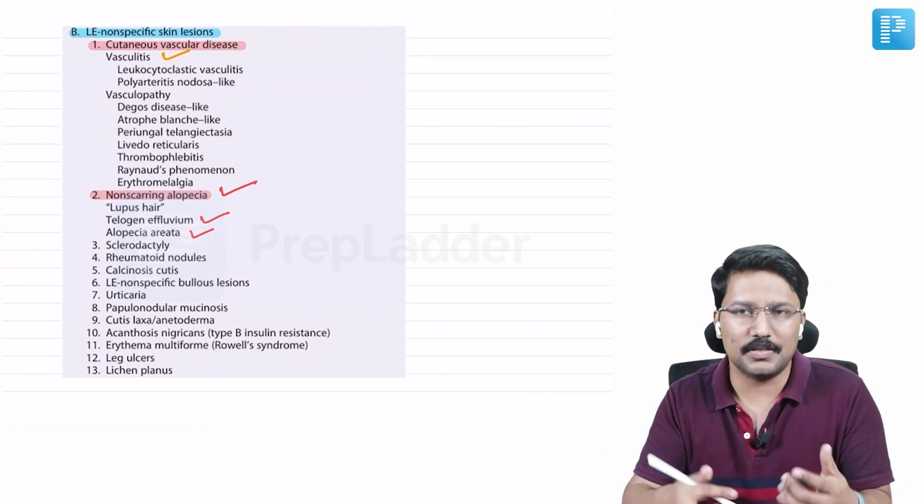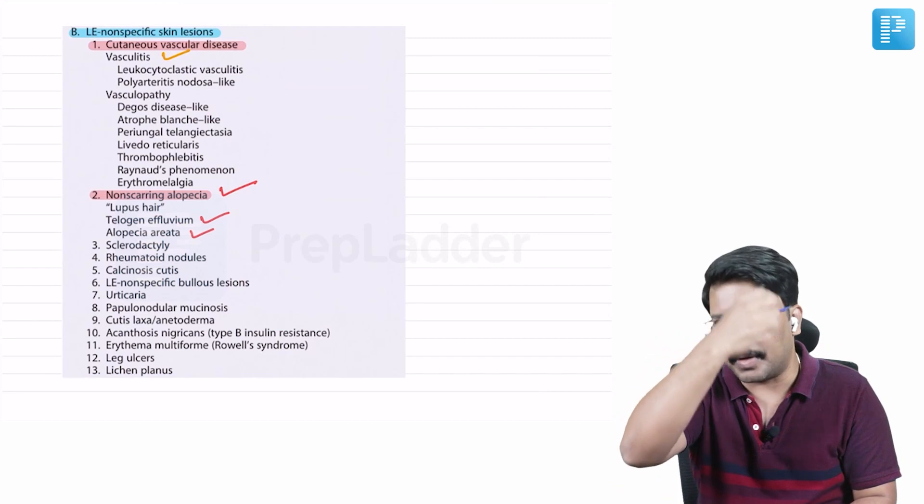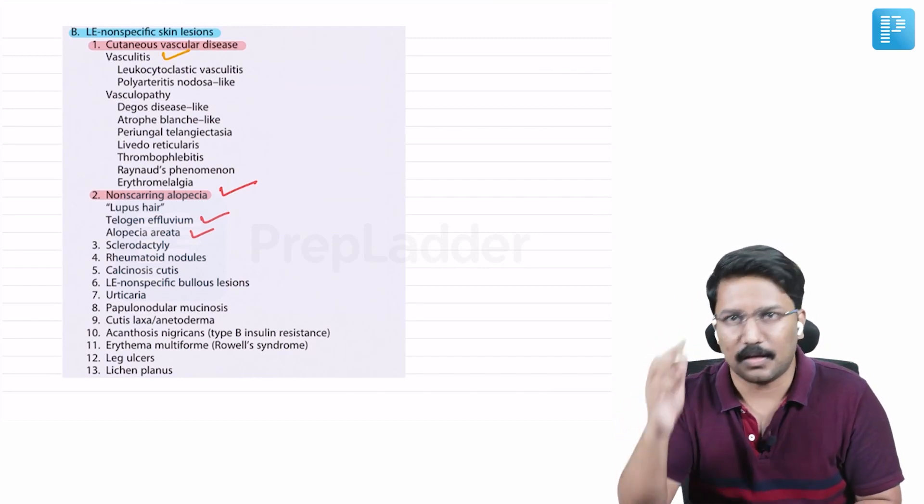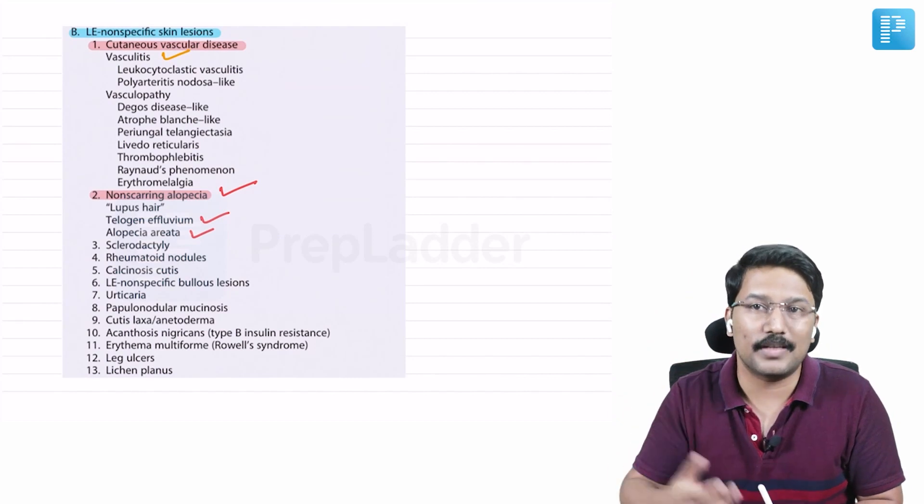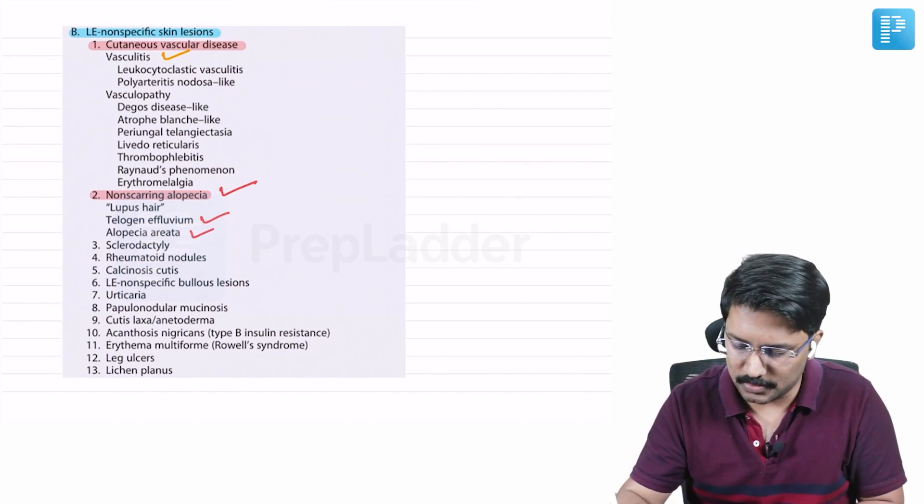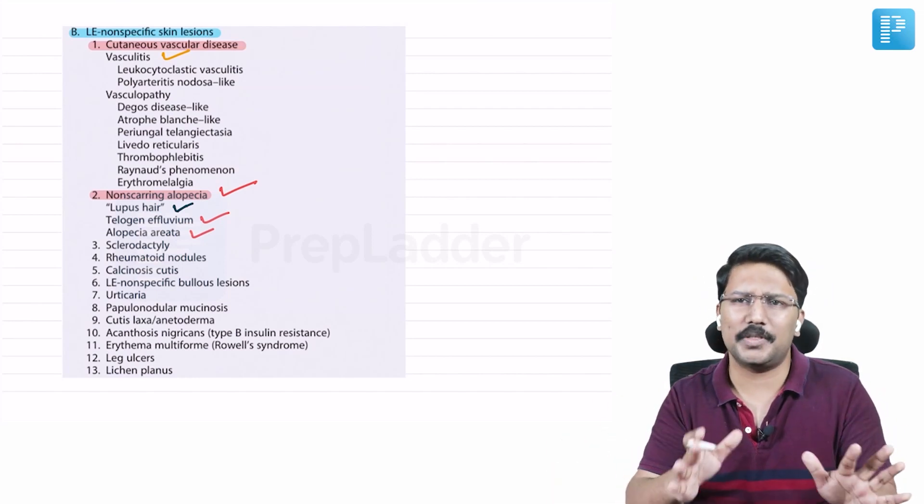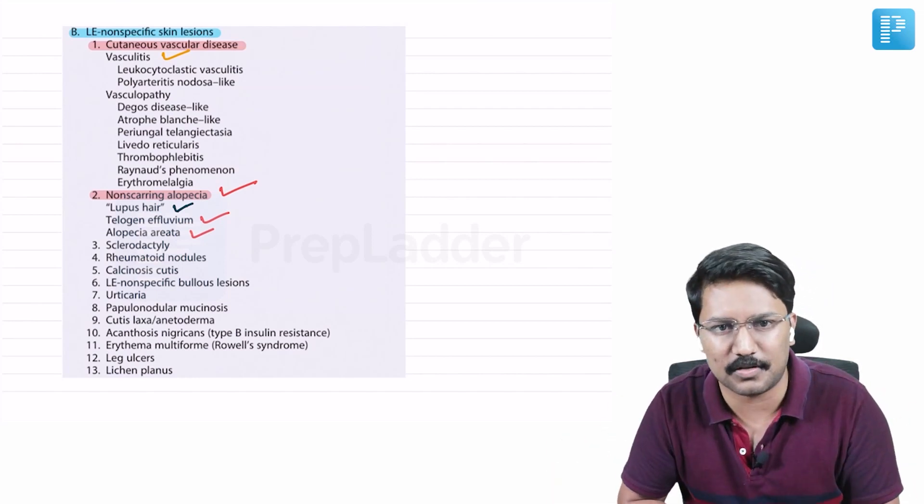So some patients, when you look at their frontal hairline, in some segment there are varying sized thin hairs present in the frontal hairline. That is what we call as lupus hair. So these are all manifestations in the form of non-scarring alopecia. Scarring alopecia is typical story of discoid lupus erythematosus.